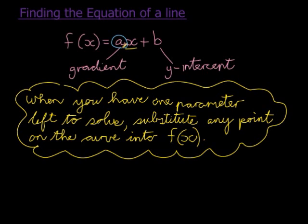Once we have the gradient, we'll use this idea to find the b value. Because if we have a, I've got one parameter left to solve. All I need to do is substitute any point on the curve into my function where my a is already found.